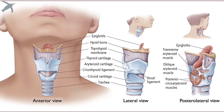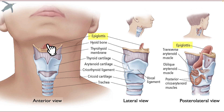This cartilage enlarges during puberty upon exposure to testosterone, which is why most males will have a deepening of the voice during puberty. Most superiorly, you see the hyoid bone, and this is the epiglottis — epi means 'on top.'